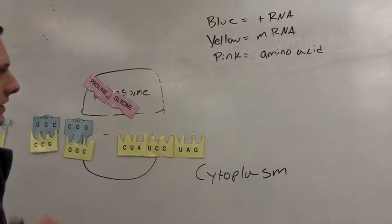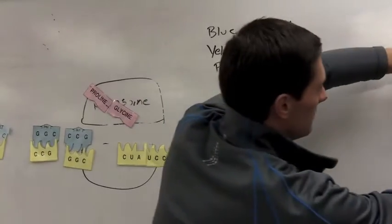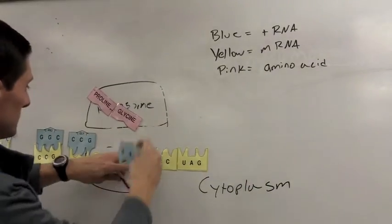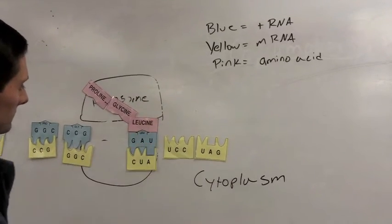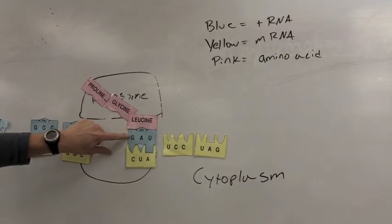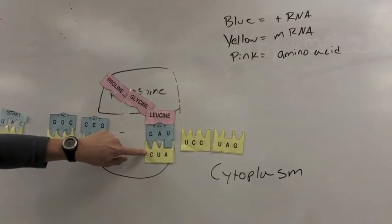And so then this messenger RNA strand just keeps moving through the ribosome. Our anticodon for the transfer RNA, codon for the messenger RNA, amino acid attached.